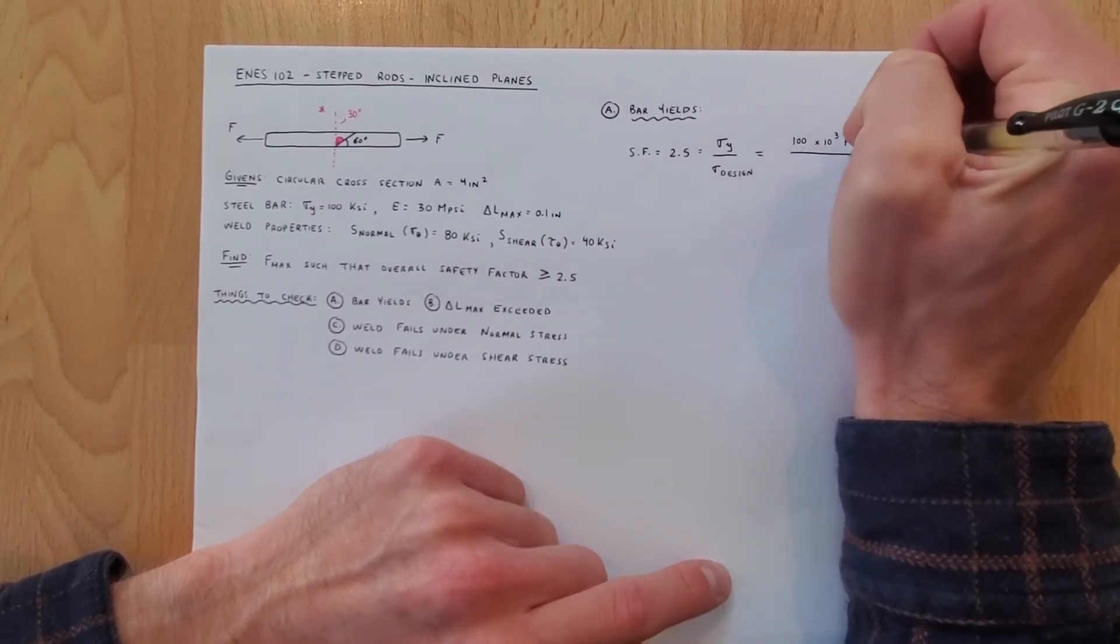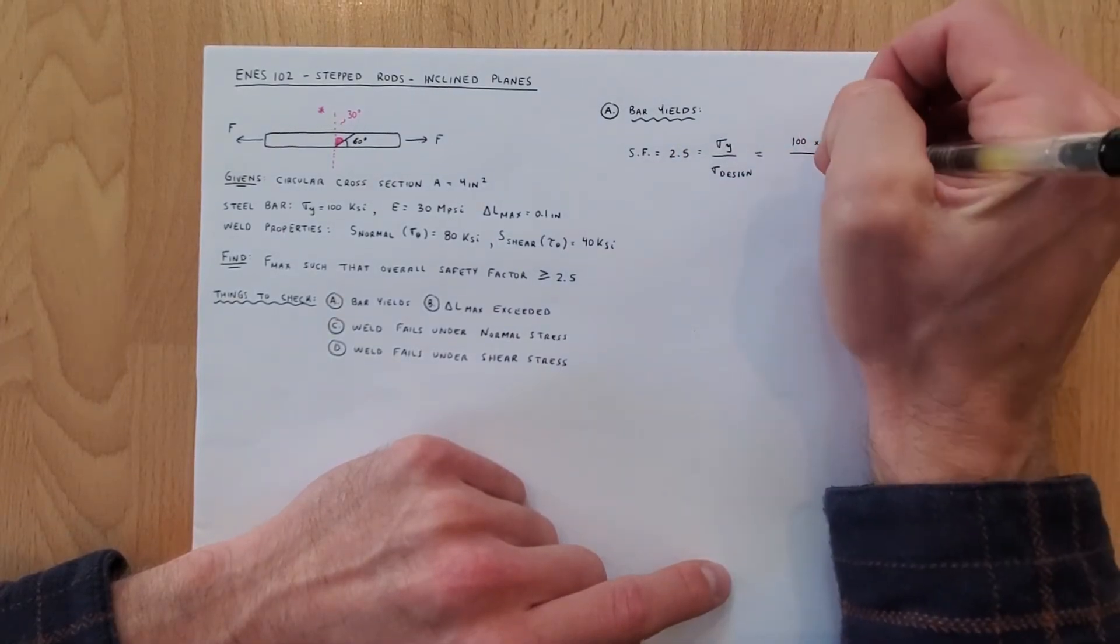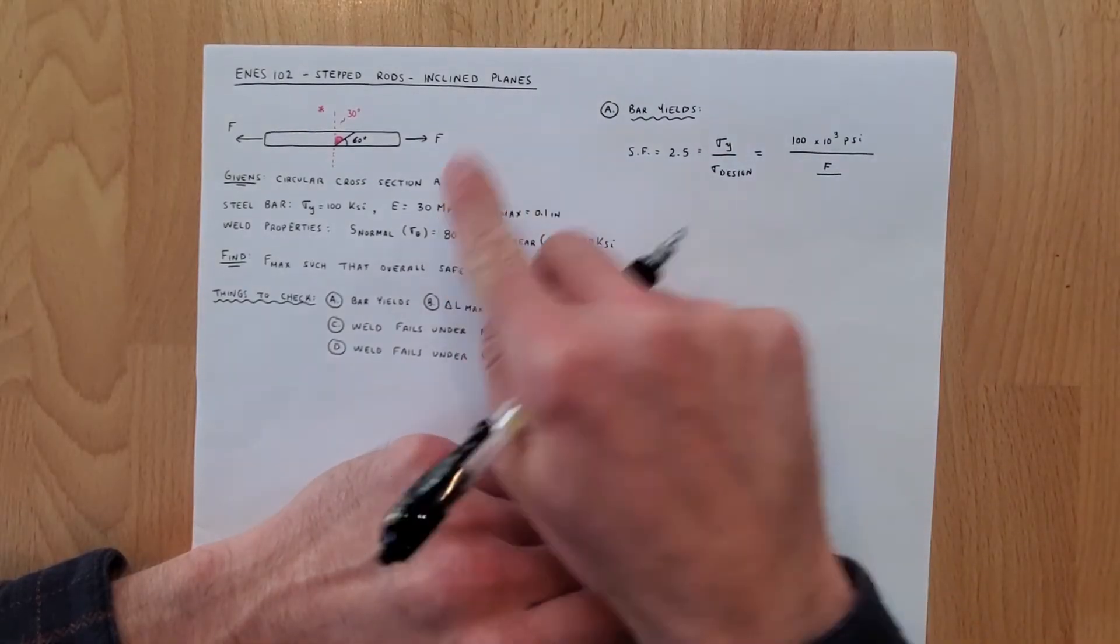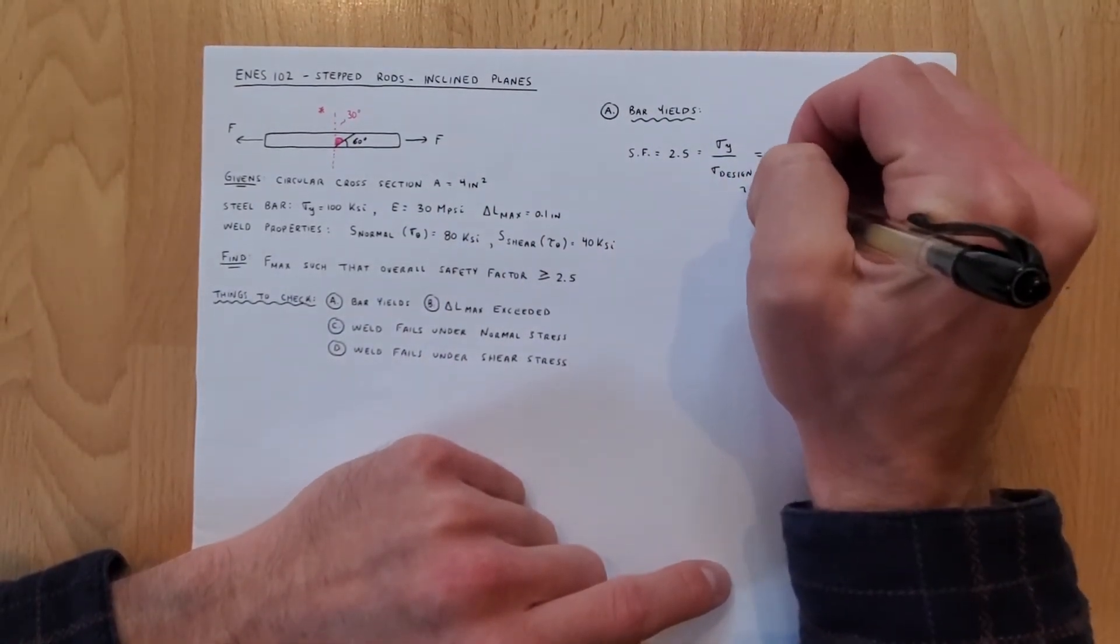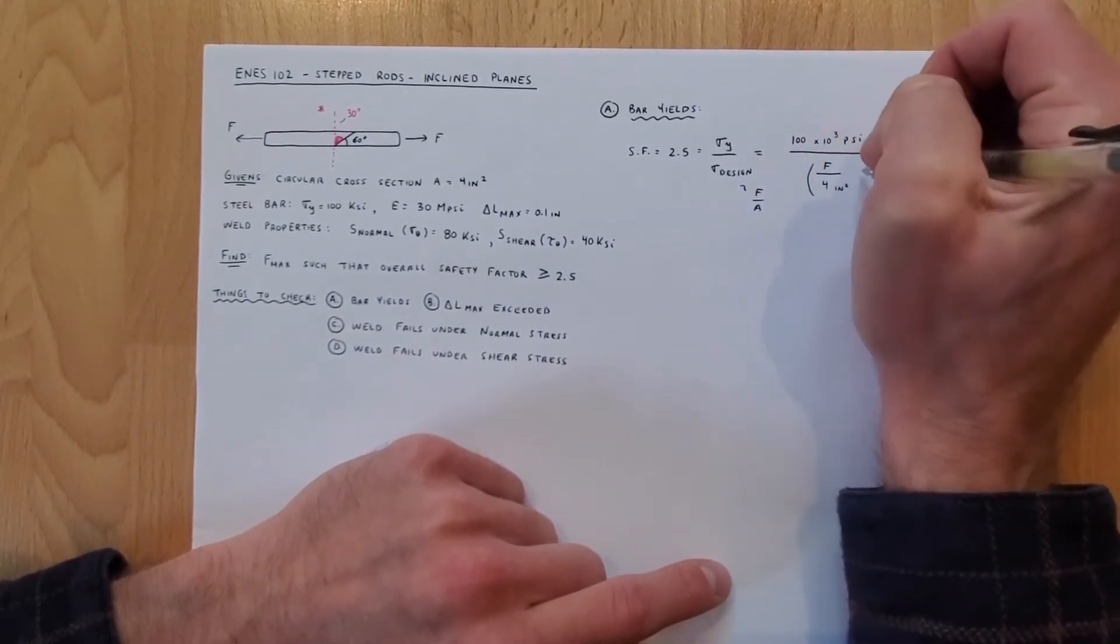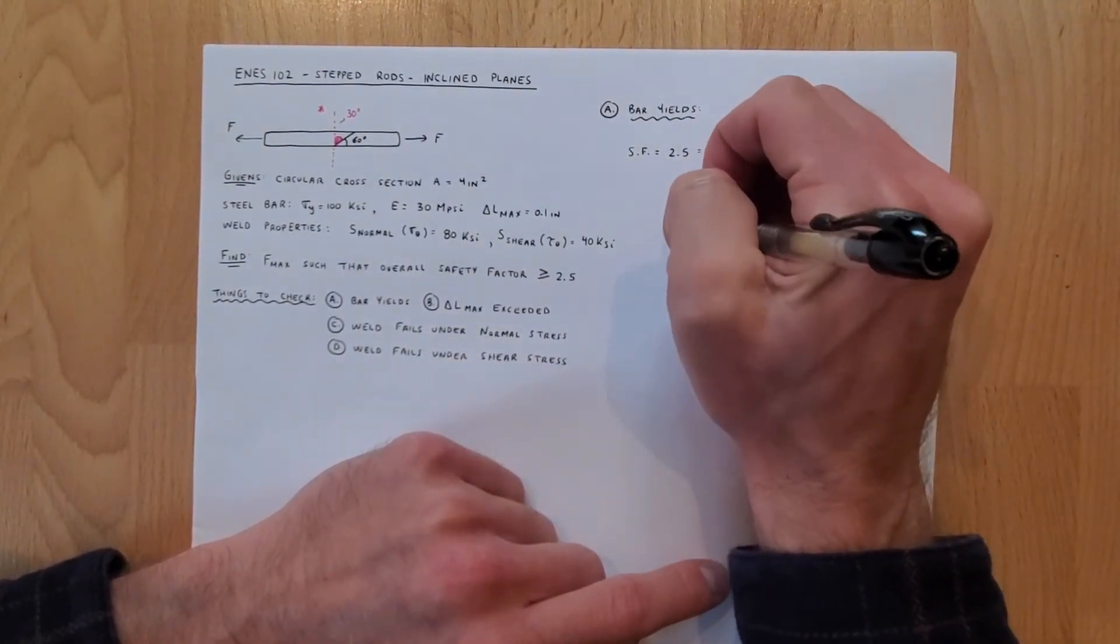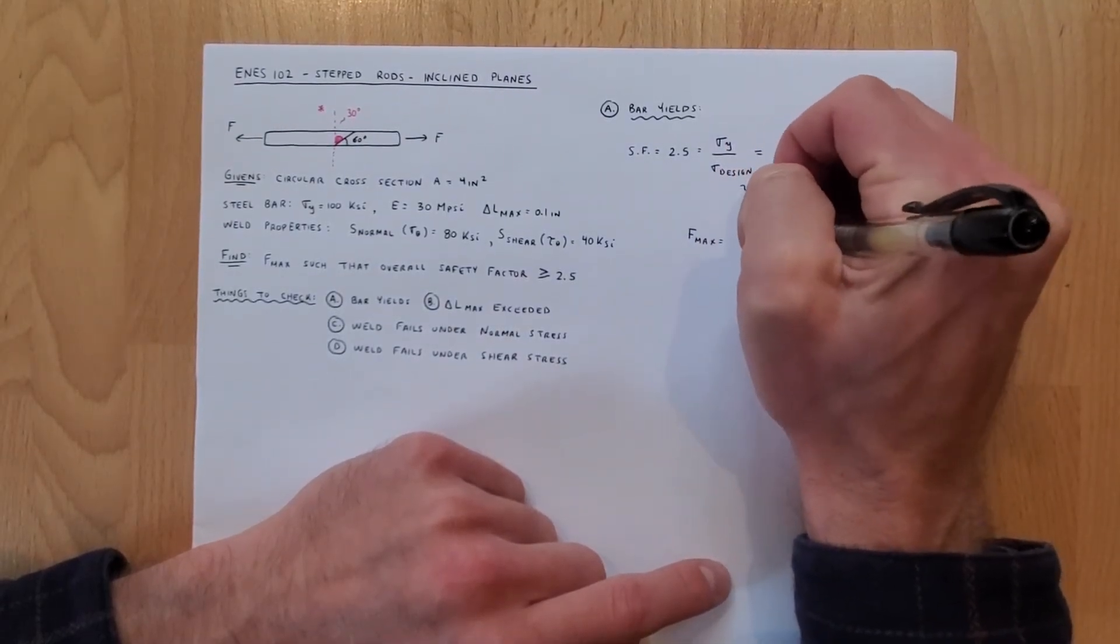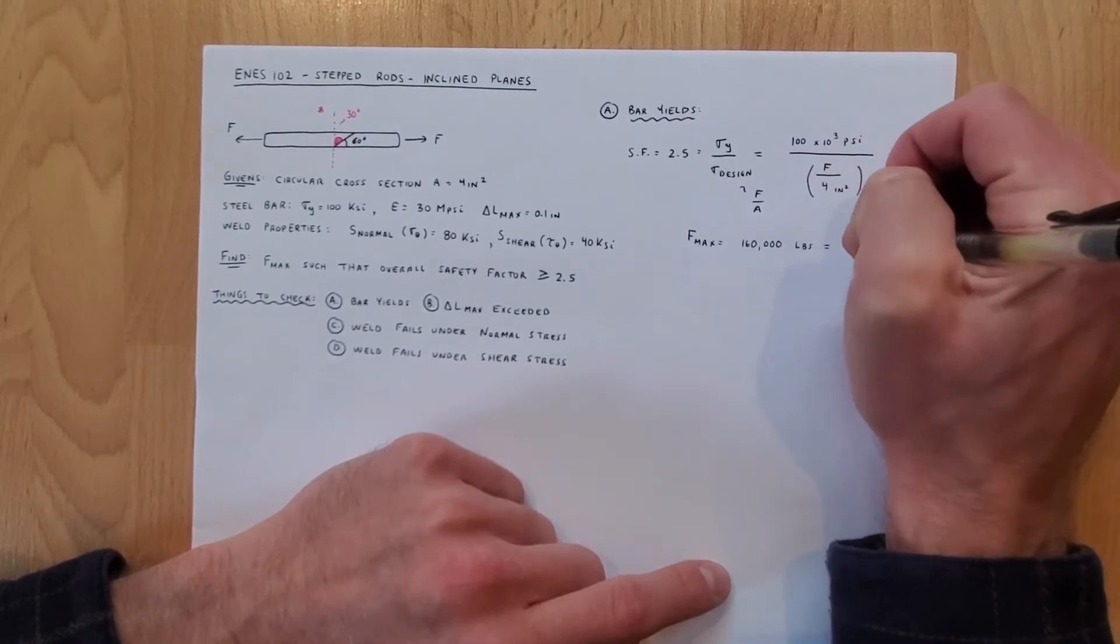So we know that sigma y is given it's 100 ksi so it's 100 times 10 to the third psi divided by our sigma design which looking here we've got only a single f so that's going to be f over a, which our area we're told is 4 inches squared. So we calculate f max from right here we would find that f max is equal to 160,000 pounds or 160 kip.